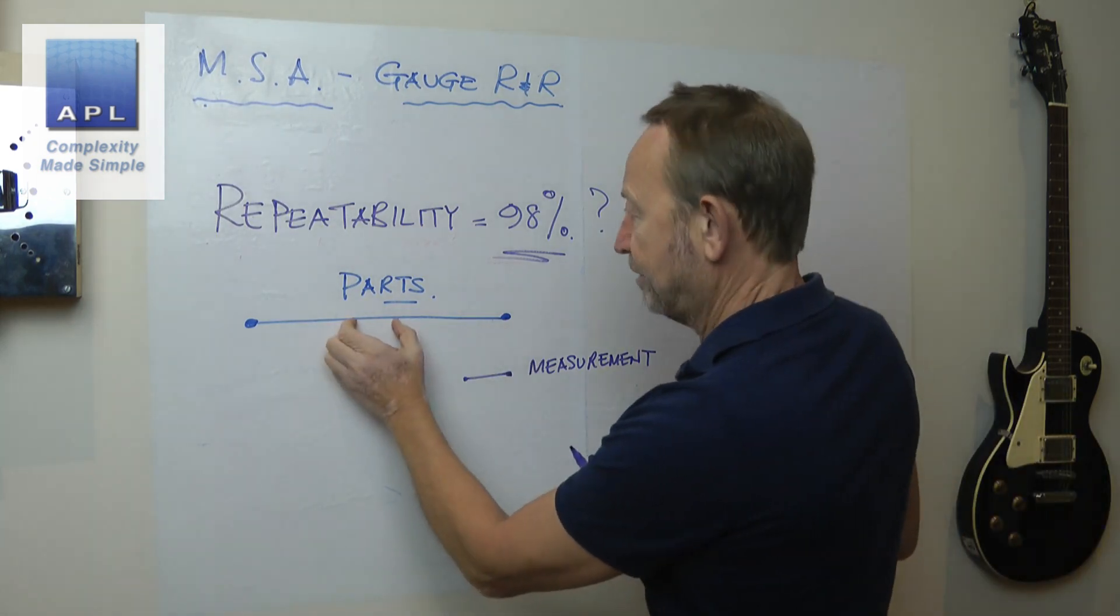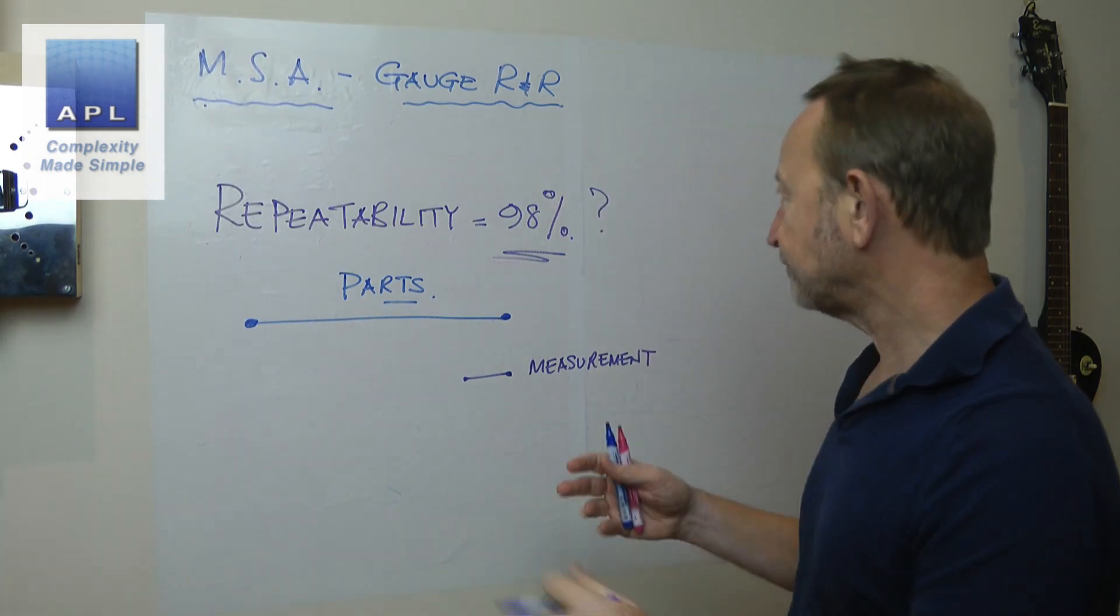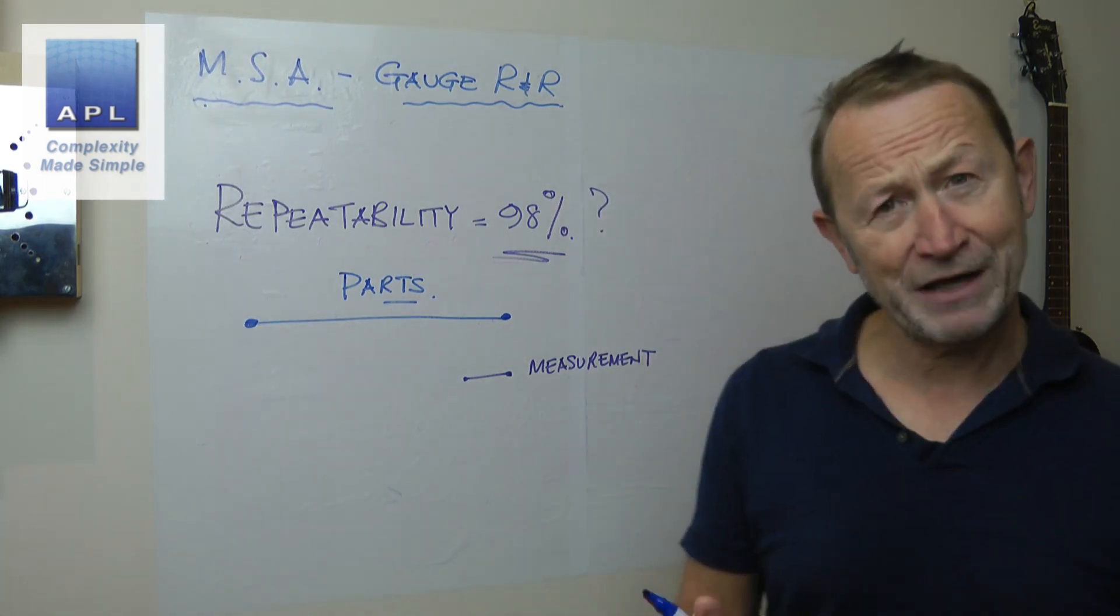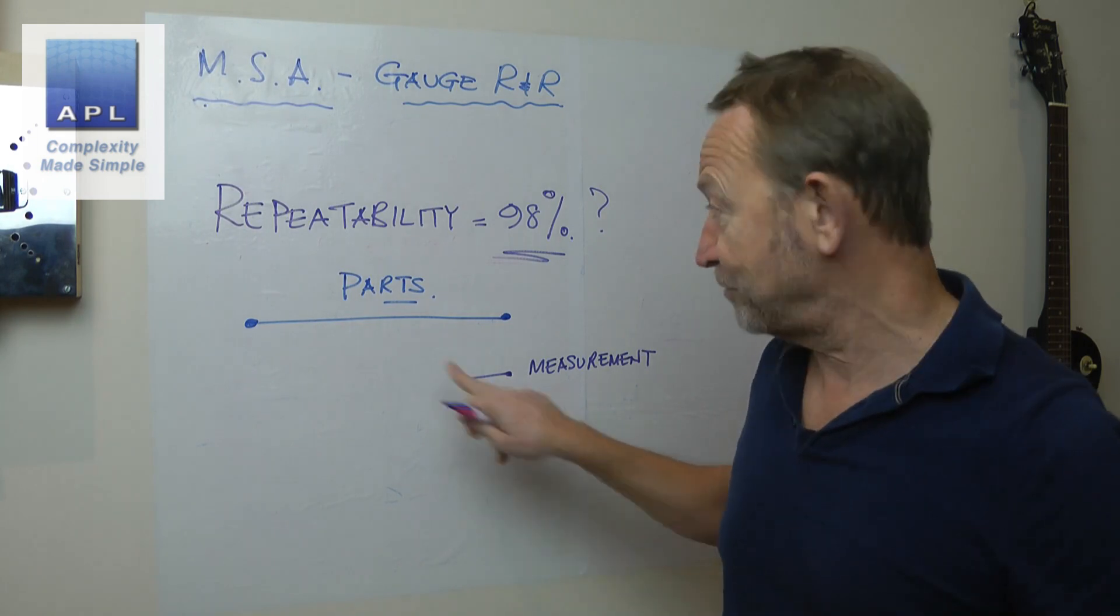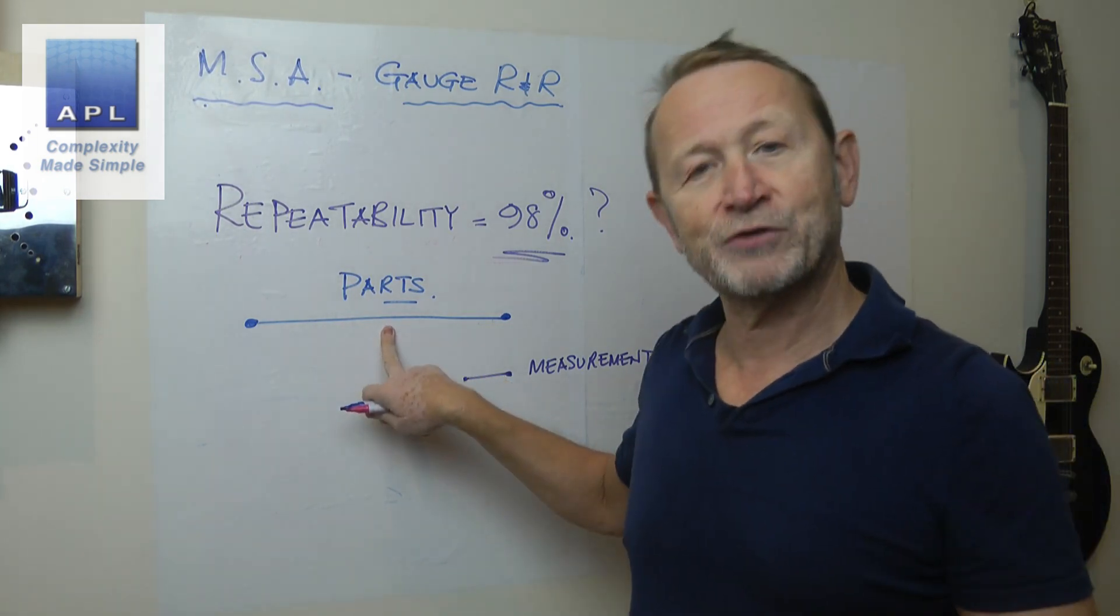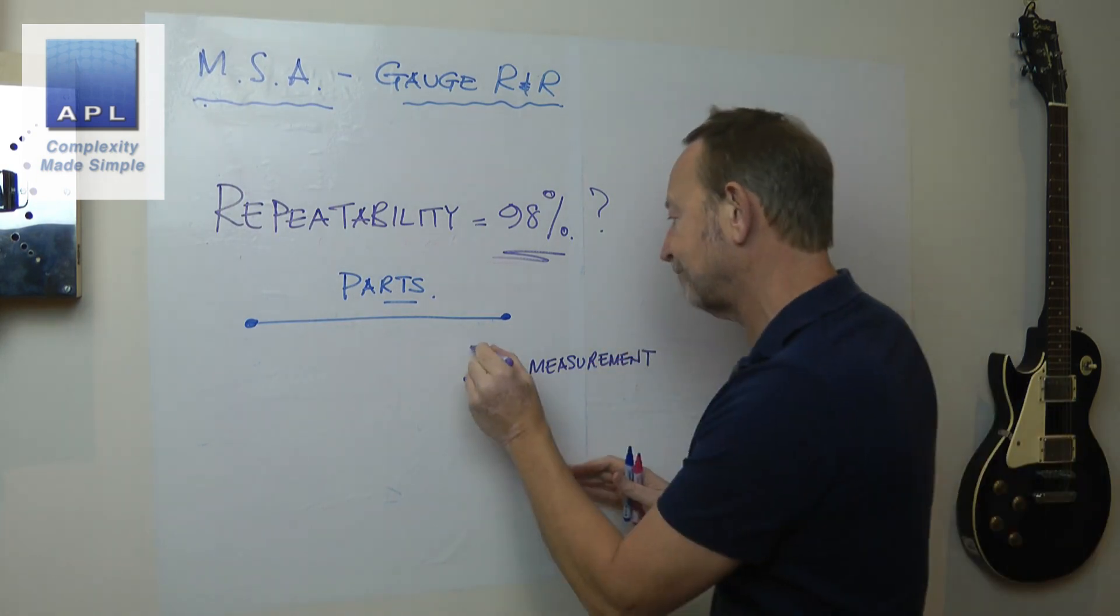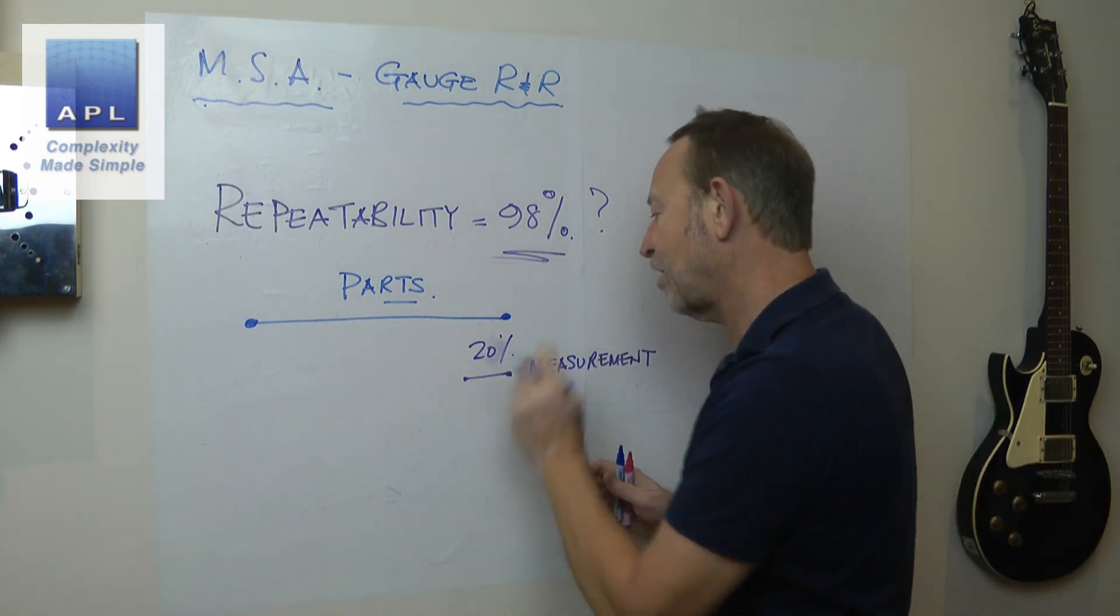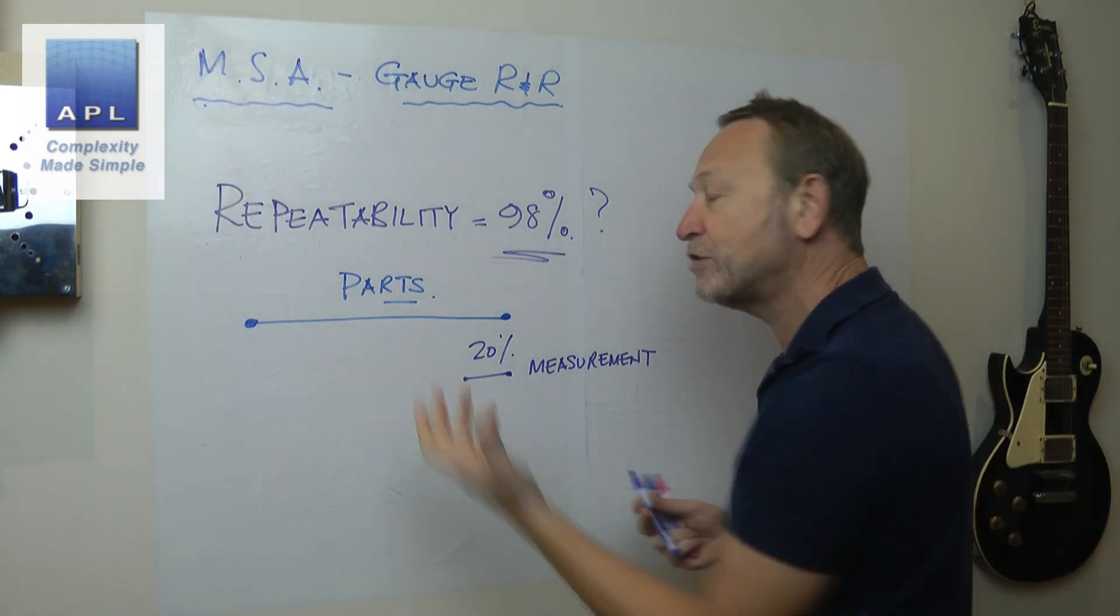And then it simply ratios that to that. So in this case, how big is that? One, two, let's call it five to keep it simple. If we were doing an MSA here, and we got that amount of variability from the measurement system, with that amount of error coming from the manufacturing system, what you would see is a contribution of about 20%. It's a ratio.